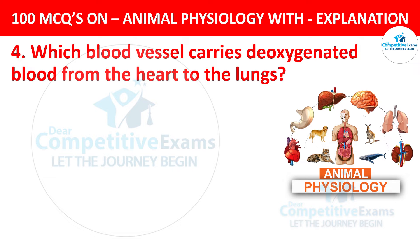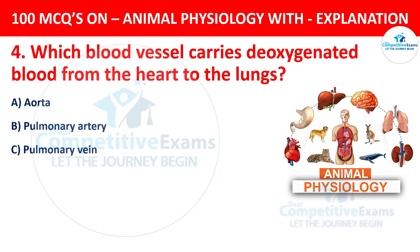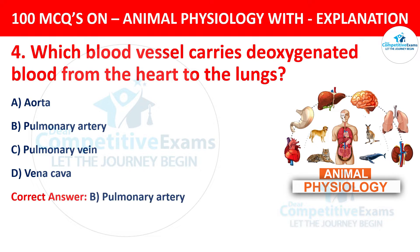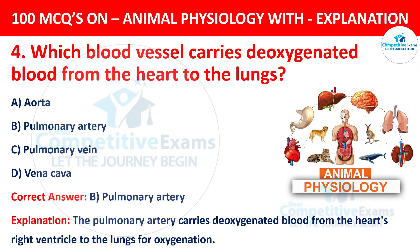Question number 4. Which blood vessel carries deoxygenated blood from the heart to the lungs? The options are aorta, pulmonary artery, pulmonary vein, or vena cava. The correct answer is B, pulmonary artery. The pulmonary artery carries deoxygenated blood from the heart's right ventricle to the lungs for oxygenation.